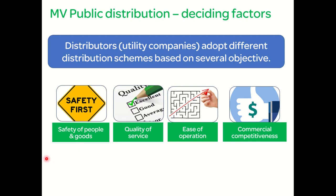As these distribution schemes are to be implemented in public areas, the first important factor to be considered is the safety of the people and their goods. The design is conceived in such a manner that any electrical installation would not cause any harm to the people's life, health, or their property. The second important factor for distribution companies to consider is the continuity of supply to the consumers.